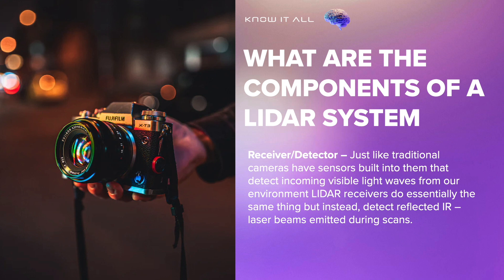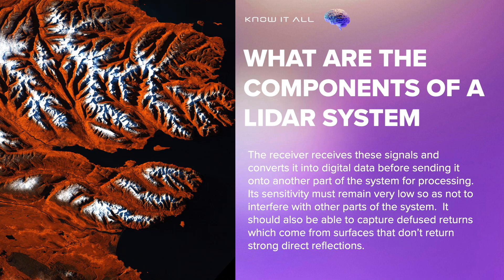Receiver slash detector: Just like traditional cameras have sensors built into them that detect incoming visible light waves from our environment, LiDAR receivers do essentially the same thing, but instead detect reflected IR laser beams emitted during scans. The receiver receives these signals and converts them into digital data before sending it on to another part of the system for processing. Its sensitivity must remain very low so as not to interfere with other parts of the system, and it should also be able to capture diffused returns which come from surfaces that don't return strong direct reflections.